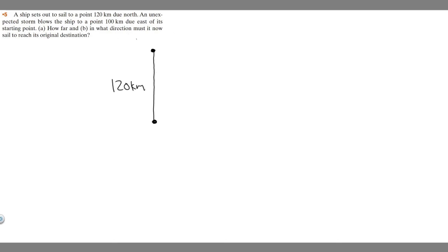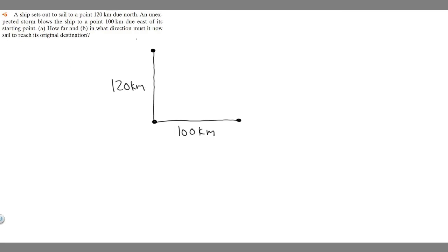An unexpected storm blows the ship to a point 100 kilometers due east of its starting point. So this is its starting point, and it's going to be 100 kilometers due east — so 100 kilometers this way. So we're trying to find how far and in what direction must it now sail to reach its original destination. This is its original destination, so we're trying to find this length right here — we'll find how far away it is, and then the direction after.